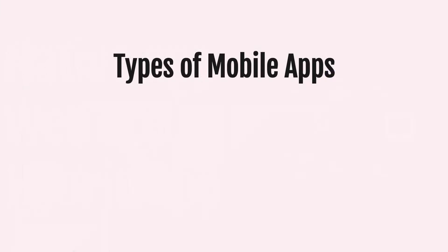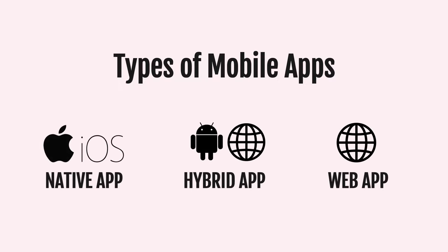Mobile applications may be classified by numerous methods, but the most popular classification is to distinguish native, web-based, and hybrid apps — each with its own set of advantages and disadvantages. Let's get familiar with them one by one.